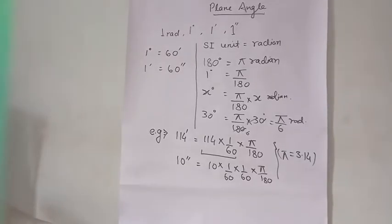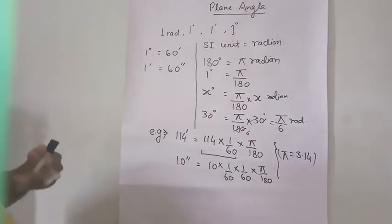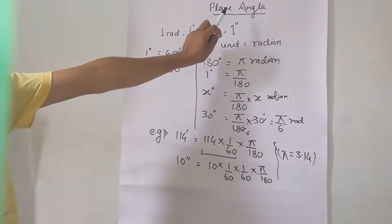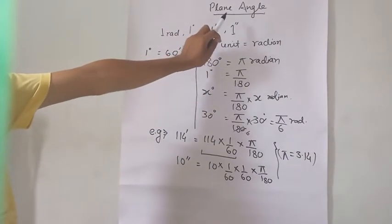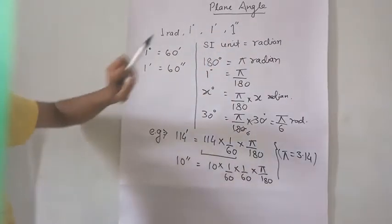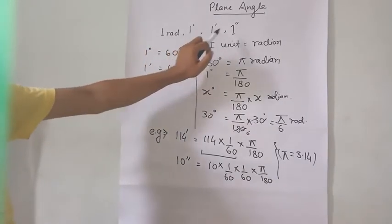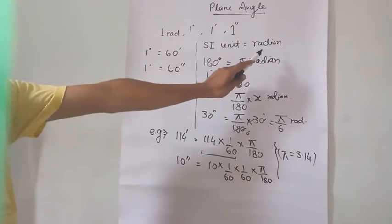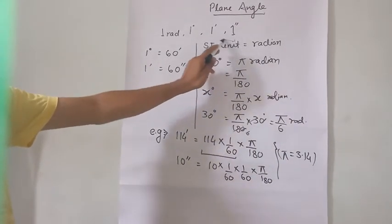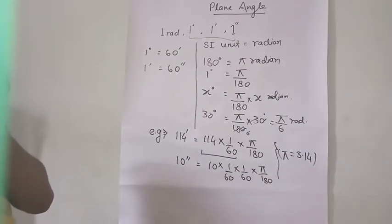Good morning class. Today I will give you a lecture on conversion of angles. First of all, what is a plane angle? That is trigonometric angles — we have studied sin theta, cos theta. That theta is known as a plane angle, and it has different units: radian, degree, minute, and second. But the SI unit is radian, so we have to learn the conversion of these three unit systems into radian.